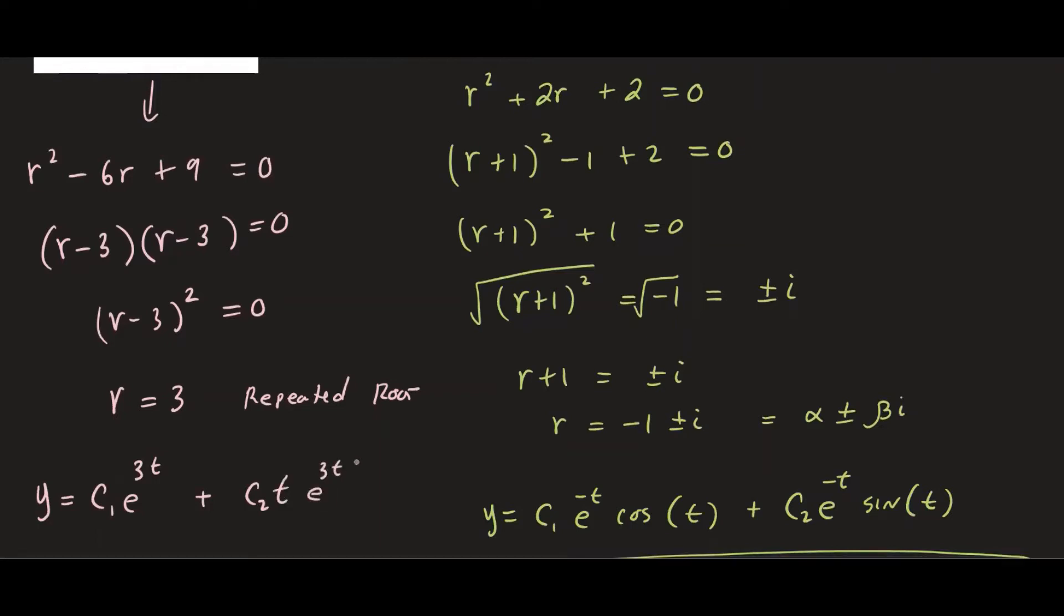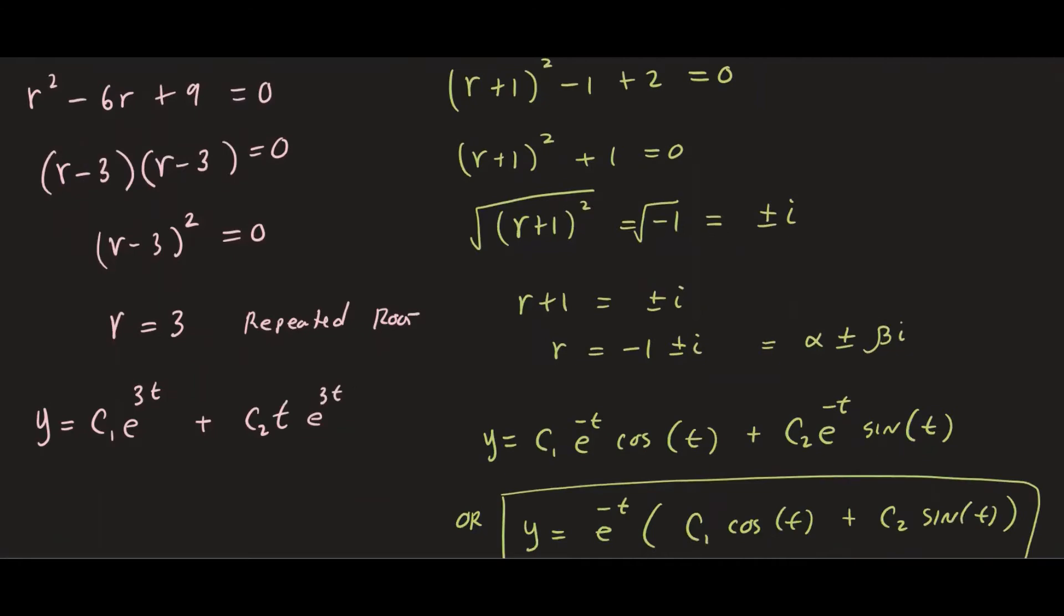So that means our solution is going to be c1 e to the 3t plus c2 t times e to the 3t. So you multiply by this extra factor t to make the second solution independent of the first solution. So that would be our solution if the roots are repeated.